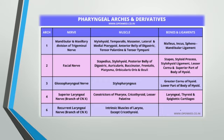The second arch: the nerve is the facial nerve. Muscles include stapedius, stylohyoid, posterior belly of digastric, auricularis, buccinator, frontalis, platysma, orbicularis oris, and orbicularis oculi. Bones and ligaments are the stapes, styloid process, stylohyoid ligament, lesser cornu, and superior part of the body of the hyoid.